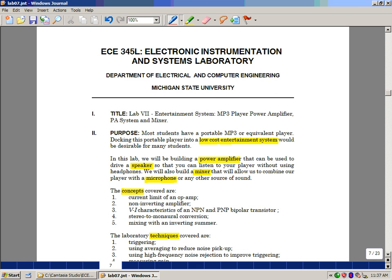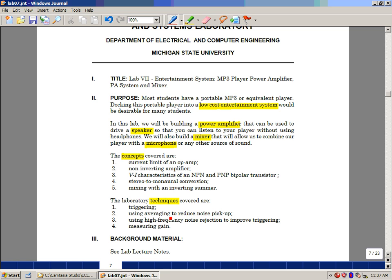The concepts that we covered here and in the lab itself are the current limit of an op-amp, the non-inverting amplifier, the VI characteristics and models of NPN and PNP transistors, stereo-to-mono conversion, and mixing with an inverting summer. Laboratory techniques we're covering are triggering of the oscilloscope, averaging to reduce noise, high-frequency noise rejection to improve triggering and stability, and measuring voltage gain. And this is lab 7, an entertainment system.